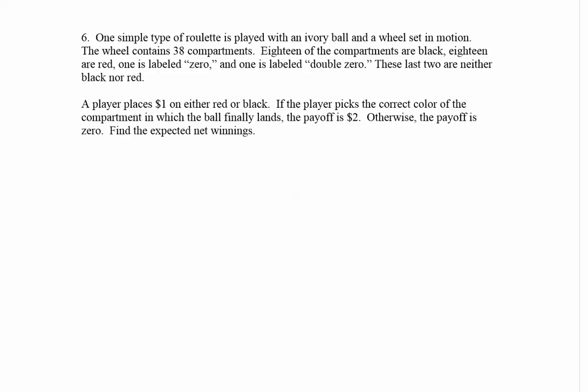A simple type of roulette is played with an ivory ball and a wheel set in motion. The wheel contains 38 compartments: 18 of the compartments are black, 18 are red, one is labeled zero, and one is labeled double zero. These last two are neither black nor red. A player places one dollar on either red or black. If the player picks the correct color of the compartment in which the ball finally lands, the payoff is two dollars; otherwise the payoff is zero.